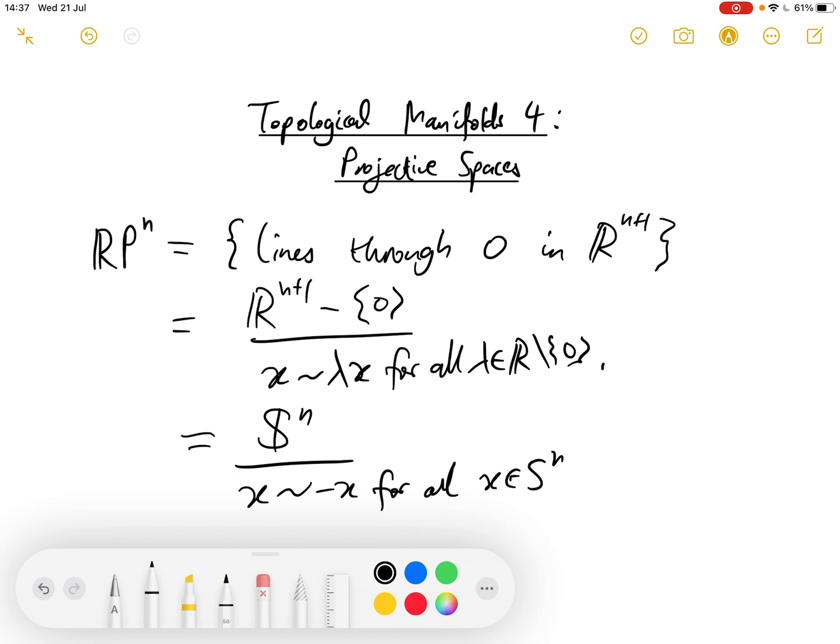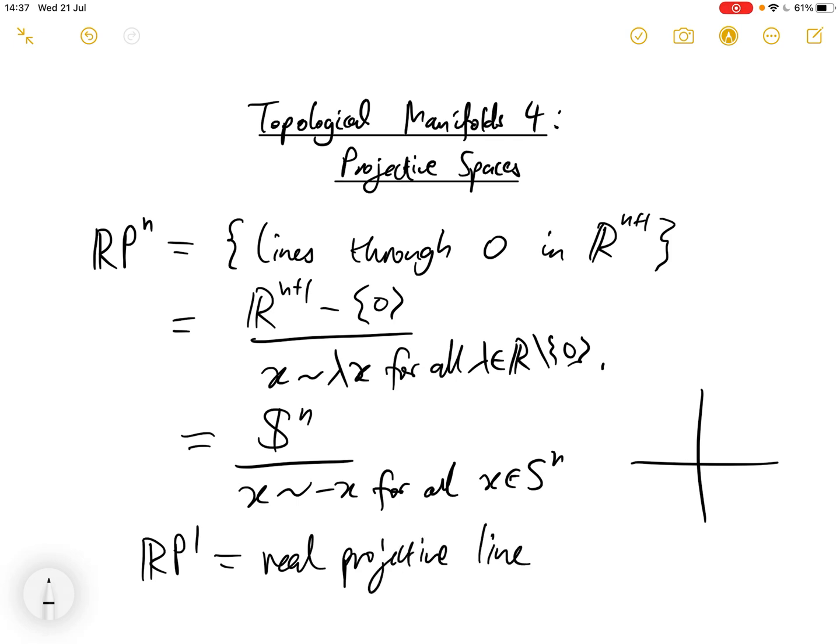So what does this look like then? Well, if we think about RP1, which is sometimes called the real projective line, this is the set of lines through the origin in RP2.